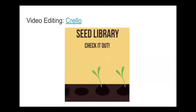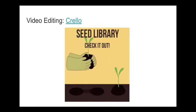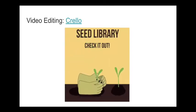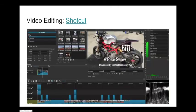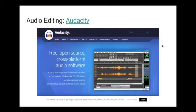Another tool similar to Canva is called Crello — a service where you can create simple animations or images using templates and adding your own content. Here's one I made quickly for the library's seed library — if you're working on your garden, don't forget you can check out seeds for free with your library card. For audio editing, Audacity is open source, free to download, and doesn't require a powerful machine to run. We have it on all the library computers. It's a great tool whether you're starting a podcast or making your own music.